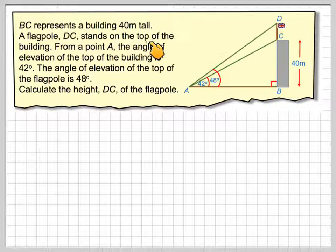BC represents a building 40 metres tall. We've got a practical problem with a building that's 40 metres tall. A flagpole DC stands on top of the building from a point A. The angle of elevation at the top of the building is 42 degrees, and the angle of elevation at the top of the flagpole is 48 degrees. Calculate the height DC of the flagpole.